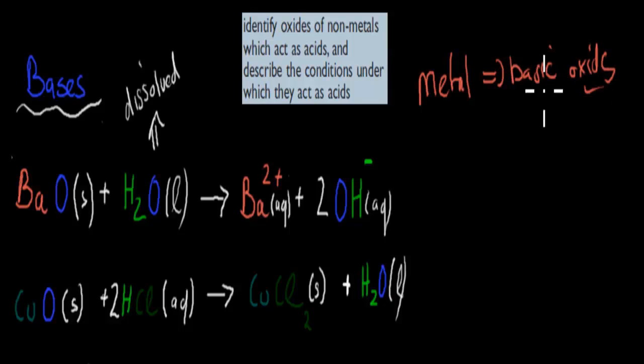Here we have BaO, barium oxide, and barium is a metal. That's why this is a metal oxide. When that reacts with water, H2O, it forms an ion, Ba2+, and also hydroxide.